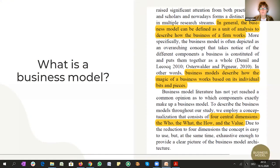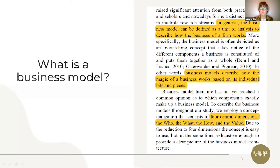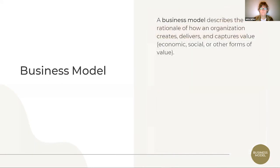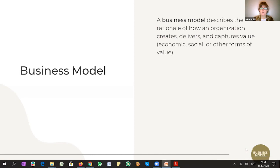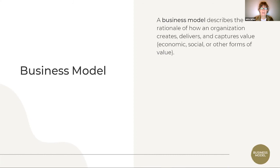We have been working with the business model canvas for quite some time now, and I would like to come back to Alexander Osterwalder, who has actually created it. He describes that a business model describes the magic of how your business works in its bits and pieces, and it's all centered around the four dimensions: the who, the what, the how, and the value. It's a one-pager, but there is a lot to it, and it's trying to help us visualize and simplify the complexity hidden in the system that drives our organizations. The definition is: it describes the rationale of how an organization creates, delivers, and captures value.